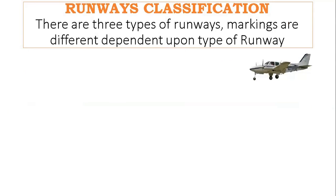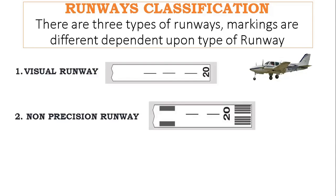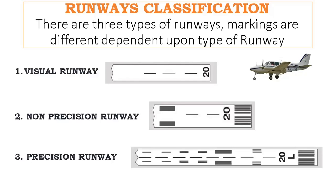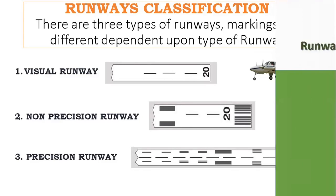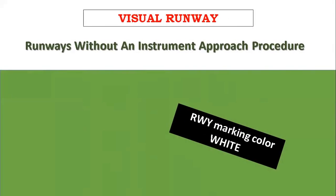Runway classification: there are three types of runways — visual runways, non-precision runways, and precision runways. Markings differ depending on the type of runway. All runway markings are white in color.